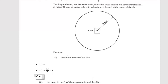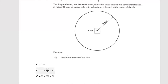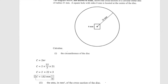We can cancel: 7 into 7 goes once, and 7 into 21 goes three times. So what we're left with is circumference equals 2 multiplied by 22 multiplied by 3, which gives us 132 millimeters. That is our answer for part one.